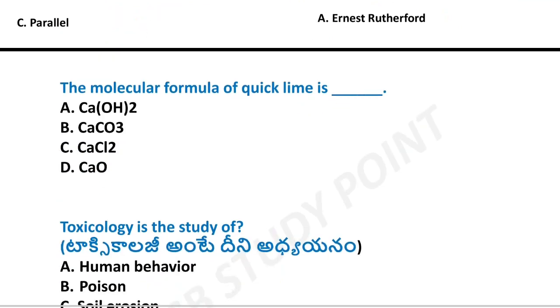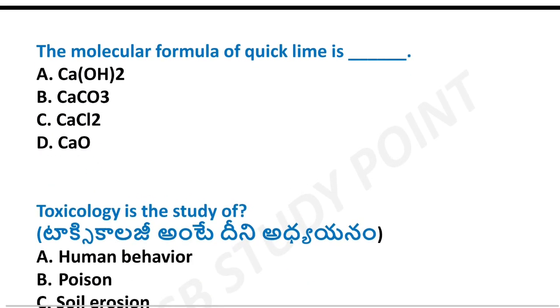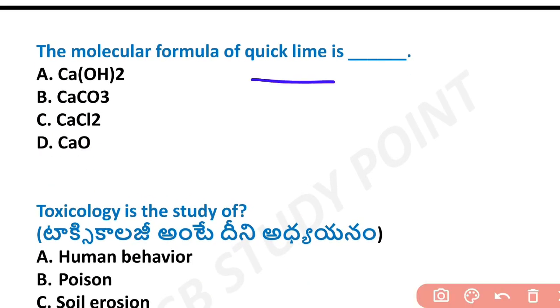Next question: what is the molecular formula of quicklime? The molecular formula of quicklime is CaO.